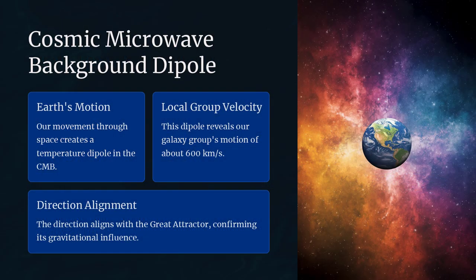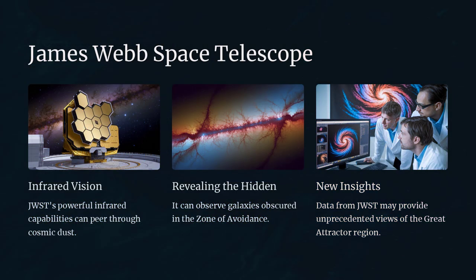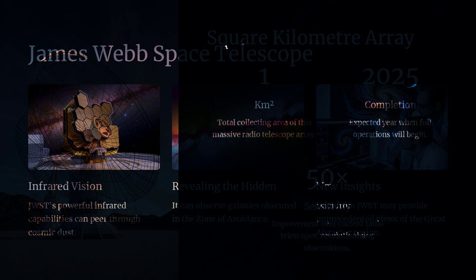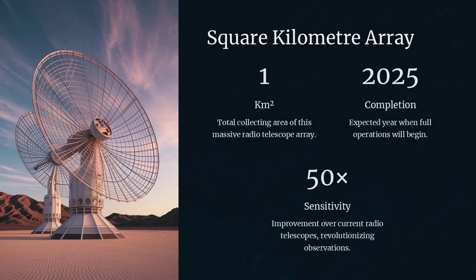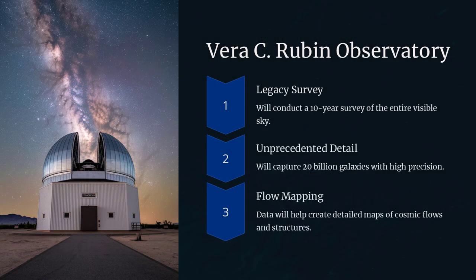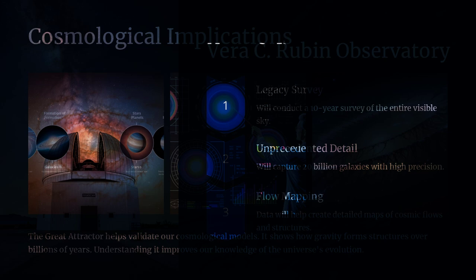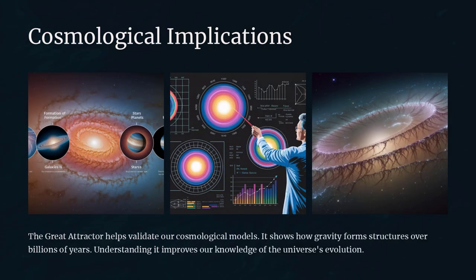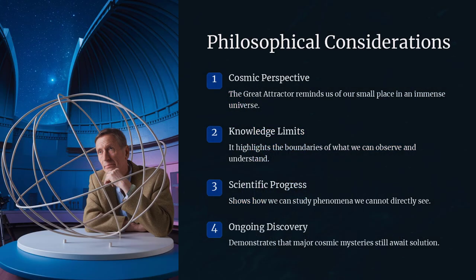In conclusion, the Great Attractor is a gravitational anomaly that draws galaxies toward an unknown region of space, likely due to an enormous concentration of mass, including dark matter. While rigorous observations and models have provided substantial evidence for its existence, many questions remain about its exact nature and the full extent of its influence.